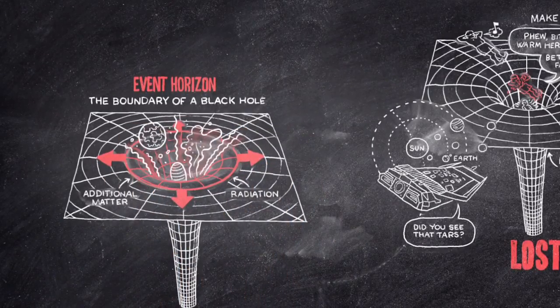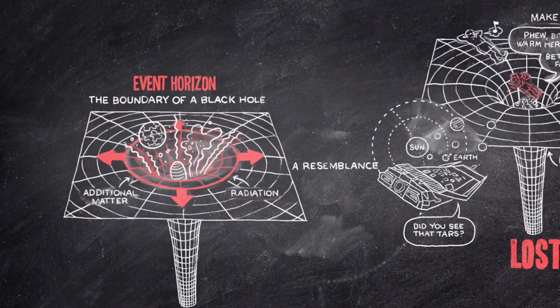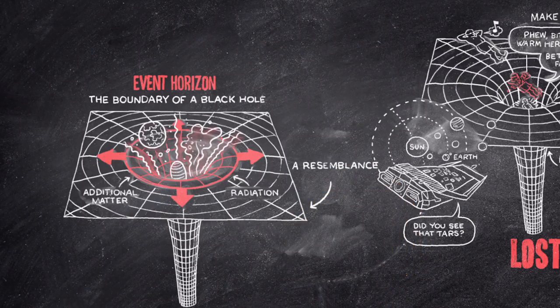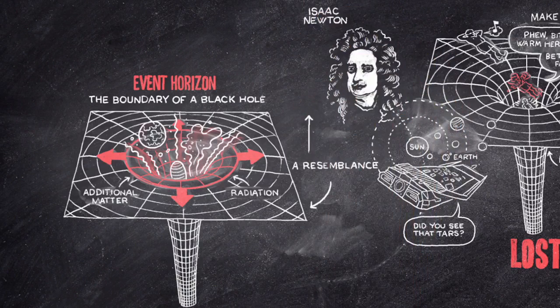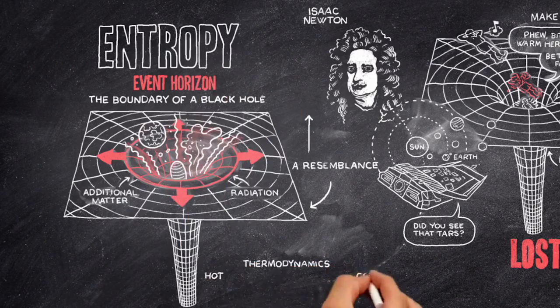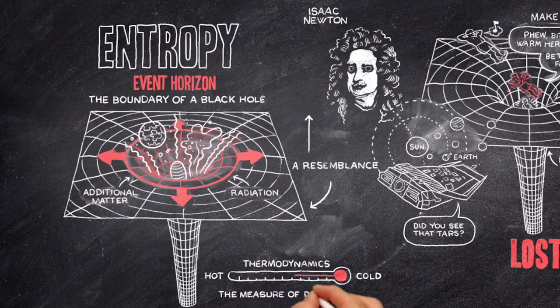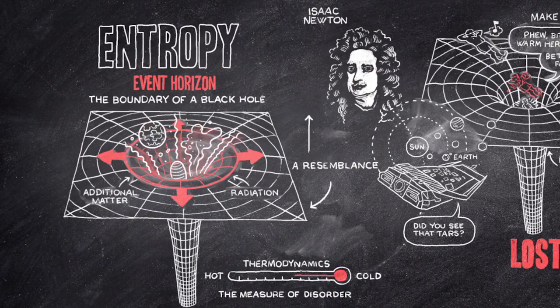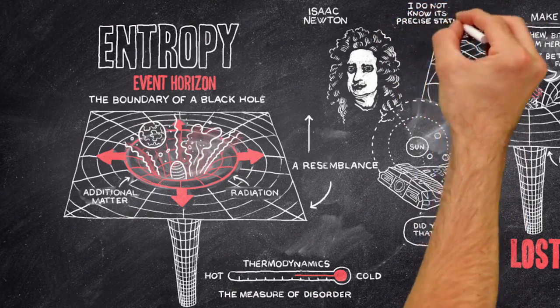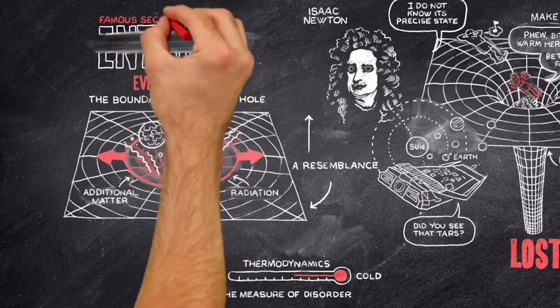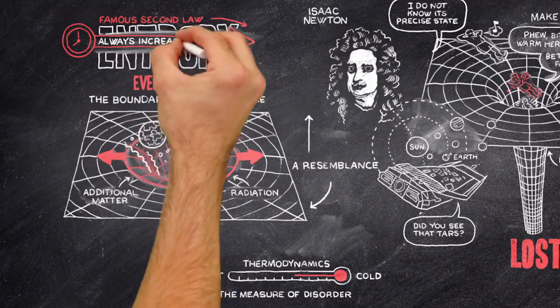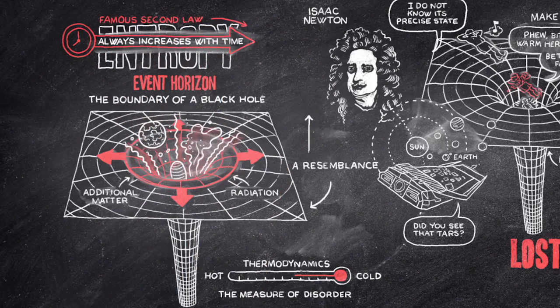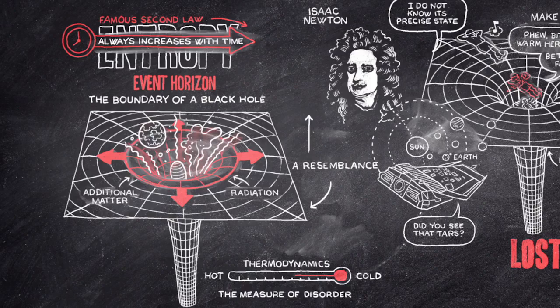These properties suggest that there is a resemblance between the area of the event horizon of a black hole and conventional Newtonian physics, specifically the concept of entropy in thermodynamics. Entropy can be regarded as a measure of the disorder of a system, or equivalently, as a lack of knowledge of its precise state. The famous second law of thermodynamics says that entropy always increases with time. This discovery was the first hint of this crucial connection.